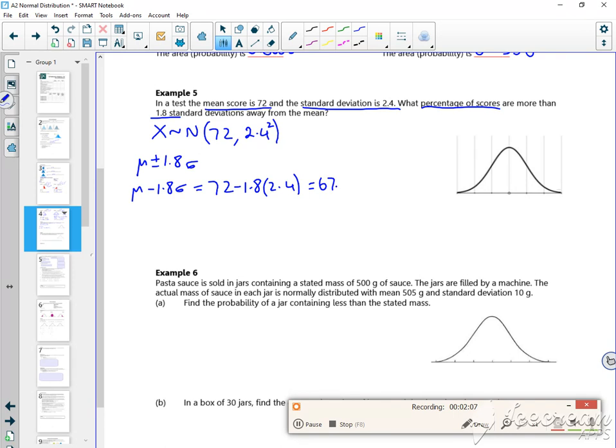You have to be careful with my writing. And then mu plus 1.8 sigma is 72 plus 1.8 lots of 2.4, which is 76.32. So I want the probability. I want the bit on the outside, don't I? So there's like my 72.